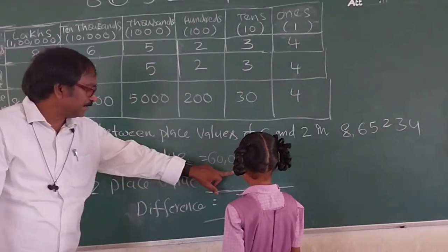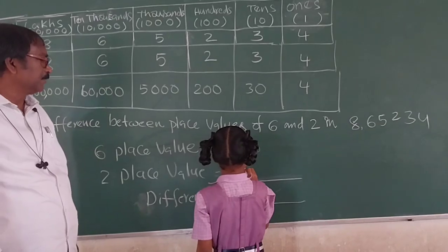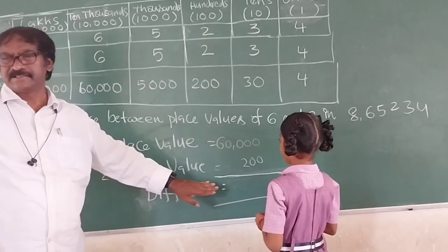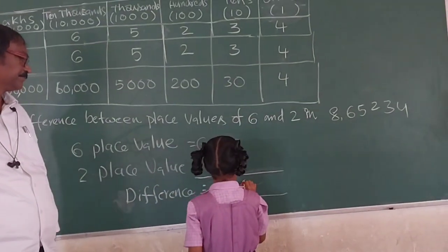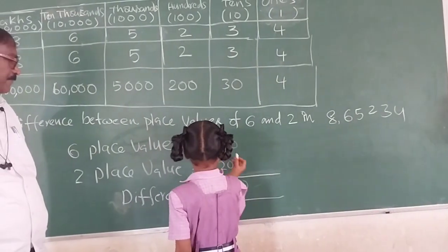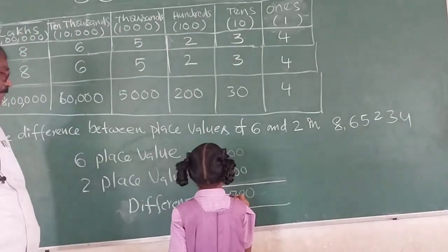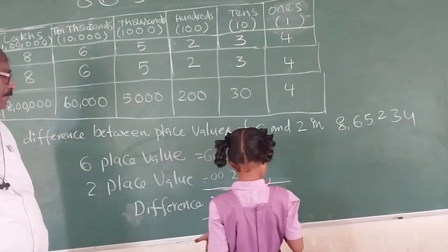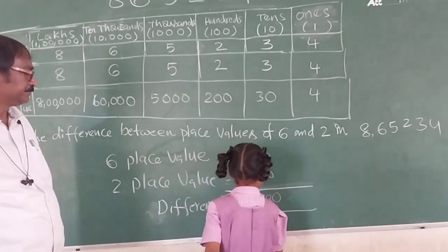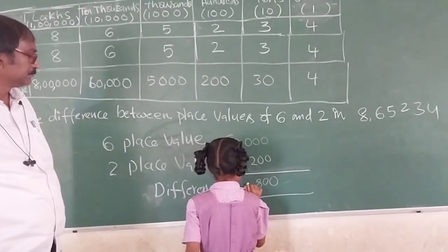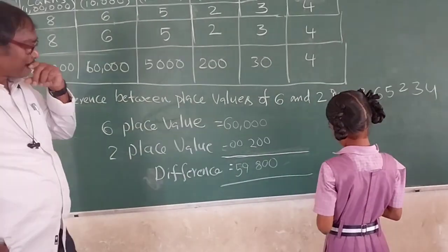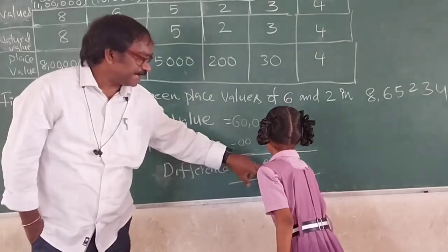What is the difference between the place values of 6 and 2? We subtract: 60,000 minus 200. The difference between the place values is 59,800.